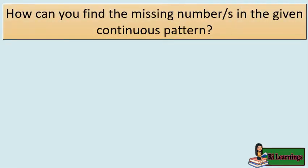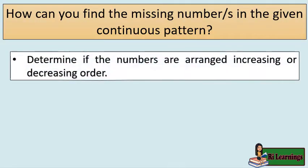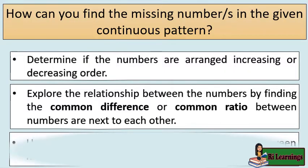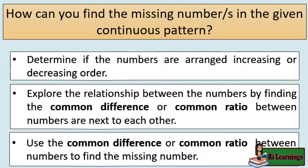How can you find the missing numbers in the given continuous pattern? We can follow this rule to find them: determine if the numbers are arranged in increasing or decreasing order; explore the relationship between the numbers by finding the common difference or common ratio between numbers next to each other; then use the common difference or common ratio to find the missing number.